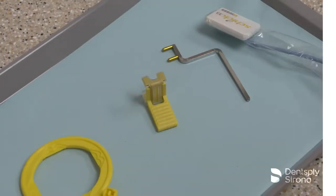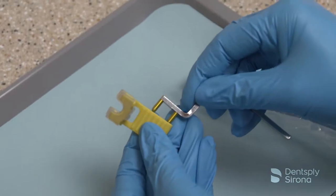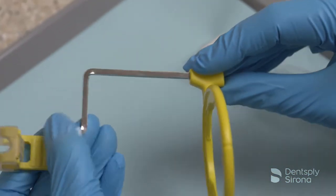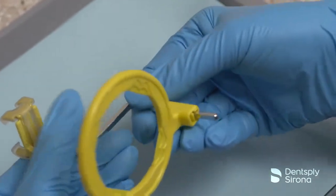To assemble the XCP short arm with XCP DS-FIT posterior bite block, place the yellow pins on the arm into the side of the yellow bite block and slide the arm into the yellow end on the aiming ring.